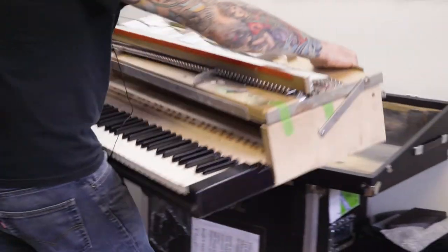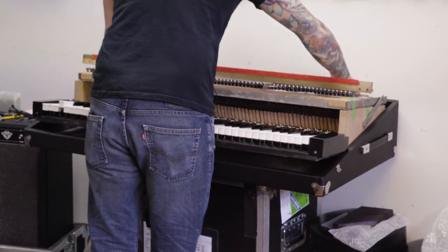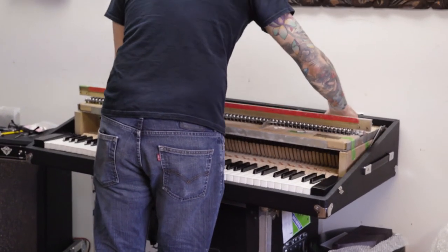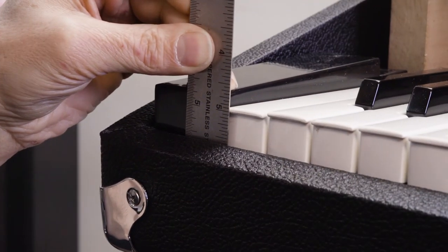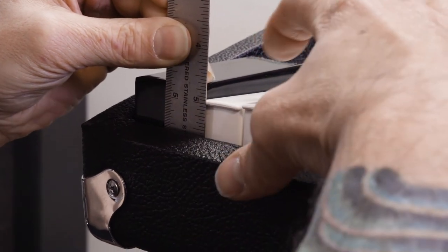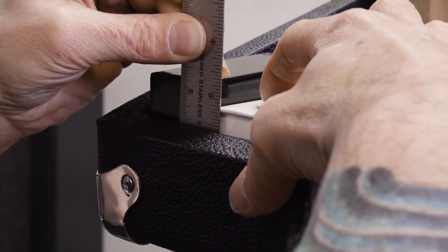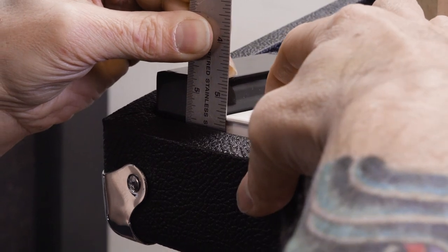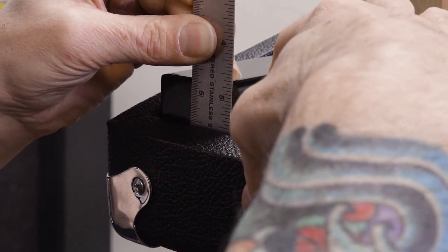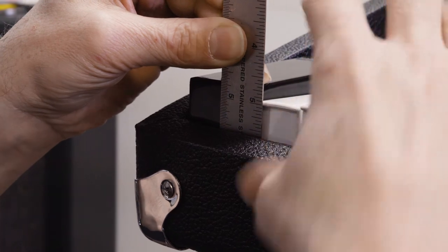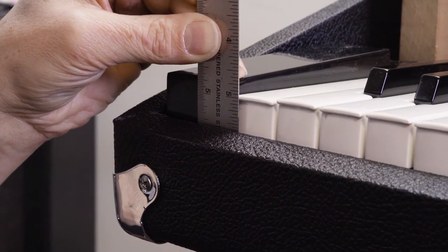Okay now we've reinstalled the key bed into the case and we're going to check our key dip after putting the shims in. So we'll see we have one-eighth, two-eighths, three-eighths plus a thirty-second. So we have a full and accurate key dip now.